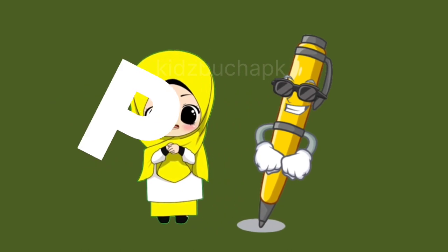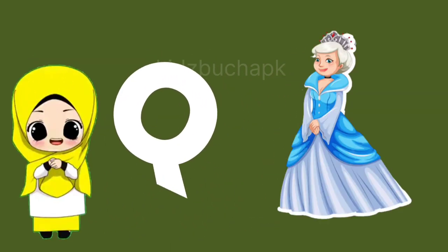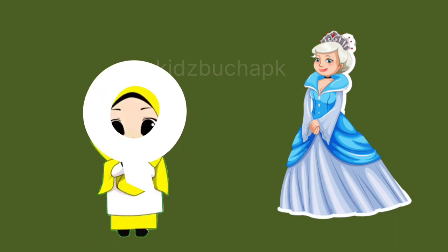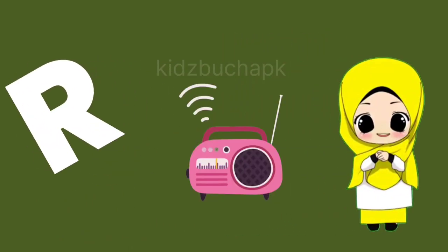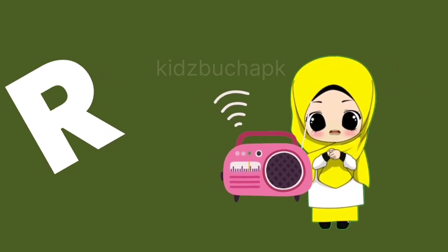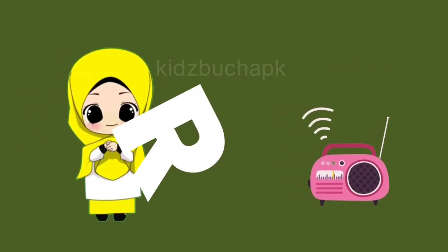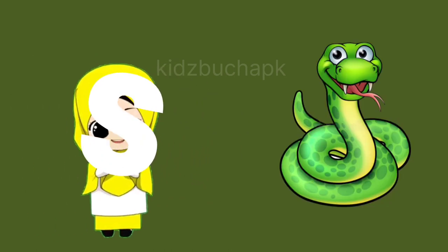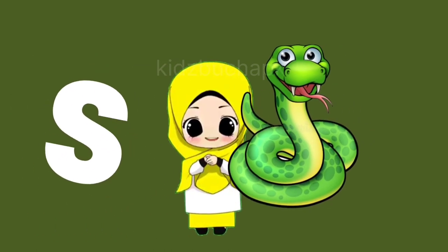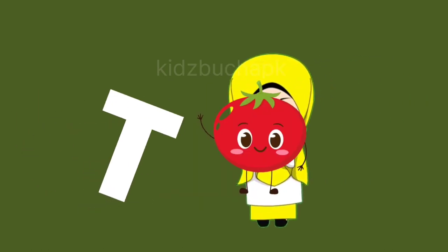Q for queen, queen means malchah. R for radio, radio means radio. S for snake, snake means saam. T for tomato, tomato means tomato.